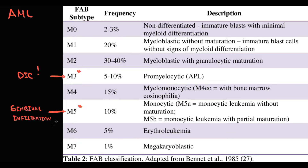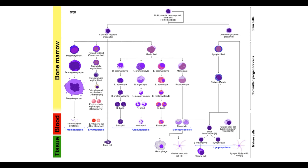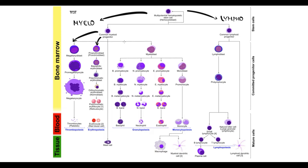We will discuss the pathogenesis of common clinical symptoms of all myeloid leukemias. Recall that hematopoiesis can be subdivided into myelopoiesis and lymphopoiesis. Myelopoiesis can be subdivided into erythropoiesis, which produces red blood cells; thrombopoiesis, which produces megakaryocytes from which platelets are formed; monocytopoiesis, which produces monocytes; and granulopoiesis, which produces neutrophils, basophils, and eosinophils. The final products of lymphopoiesis are B-lymphocytes and T-lymphocytes.